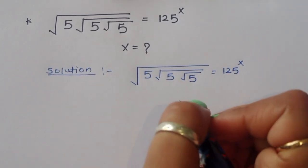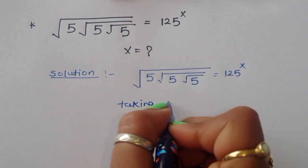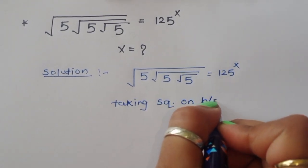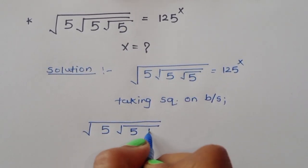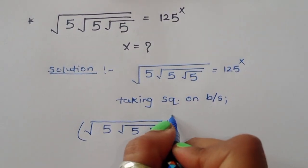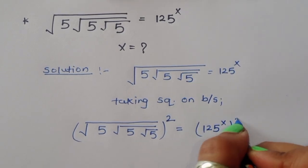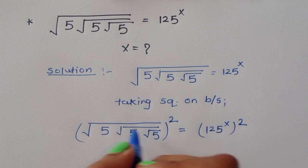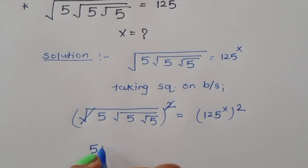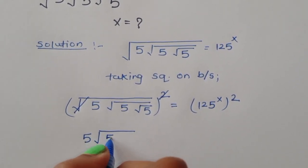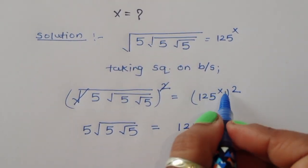First, we have to remove this square root. So we can take square on both sides. Then we will get: square root of 5 under square root of 5 under square root of 5, whole square, is equal to 125 power x square. Now, the square root and the square cancel, giving us 5 times square root of 5 under square root of 5, equal to 125 power 2x.